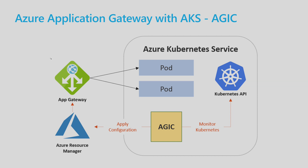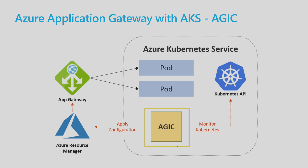Updating the Application Gateway is a heavy operation that takes time. In addition, this Application Gateway is owned by the AGIC component, which manages it as if it truly owns that resource. If you try to make any change or override any configuration, your changes will be overridden by AGIC. This makes it difficult to share one Application Gateway across multiple AKS clusters - it's doable, but requires extra configuration.